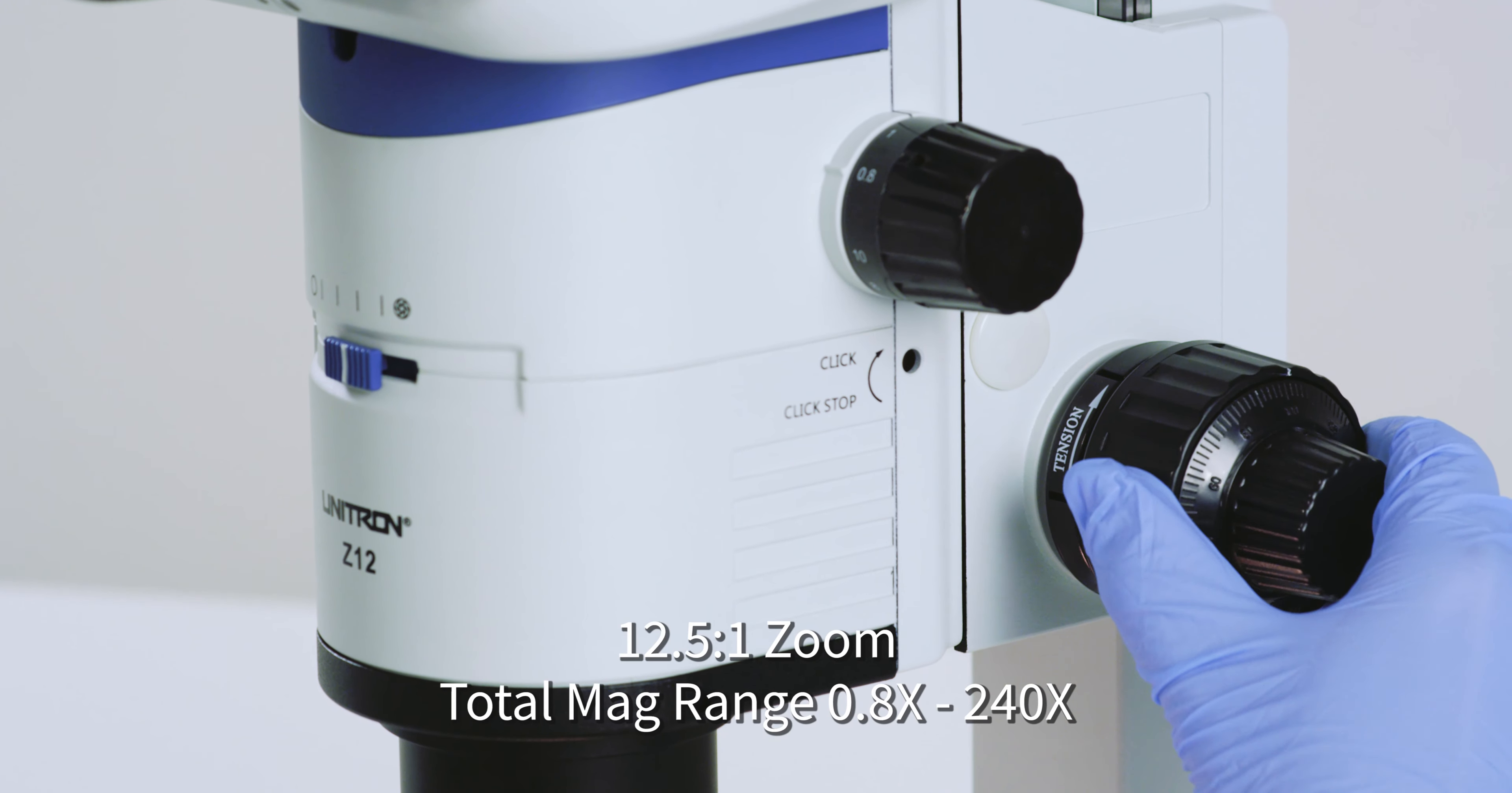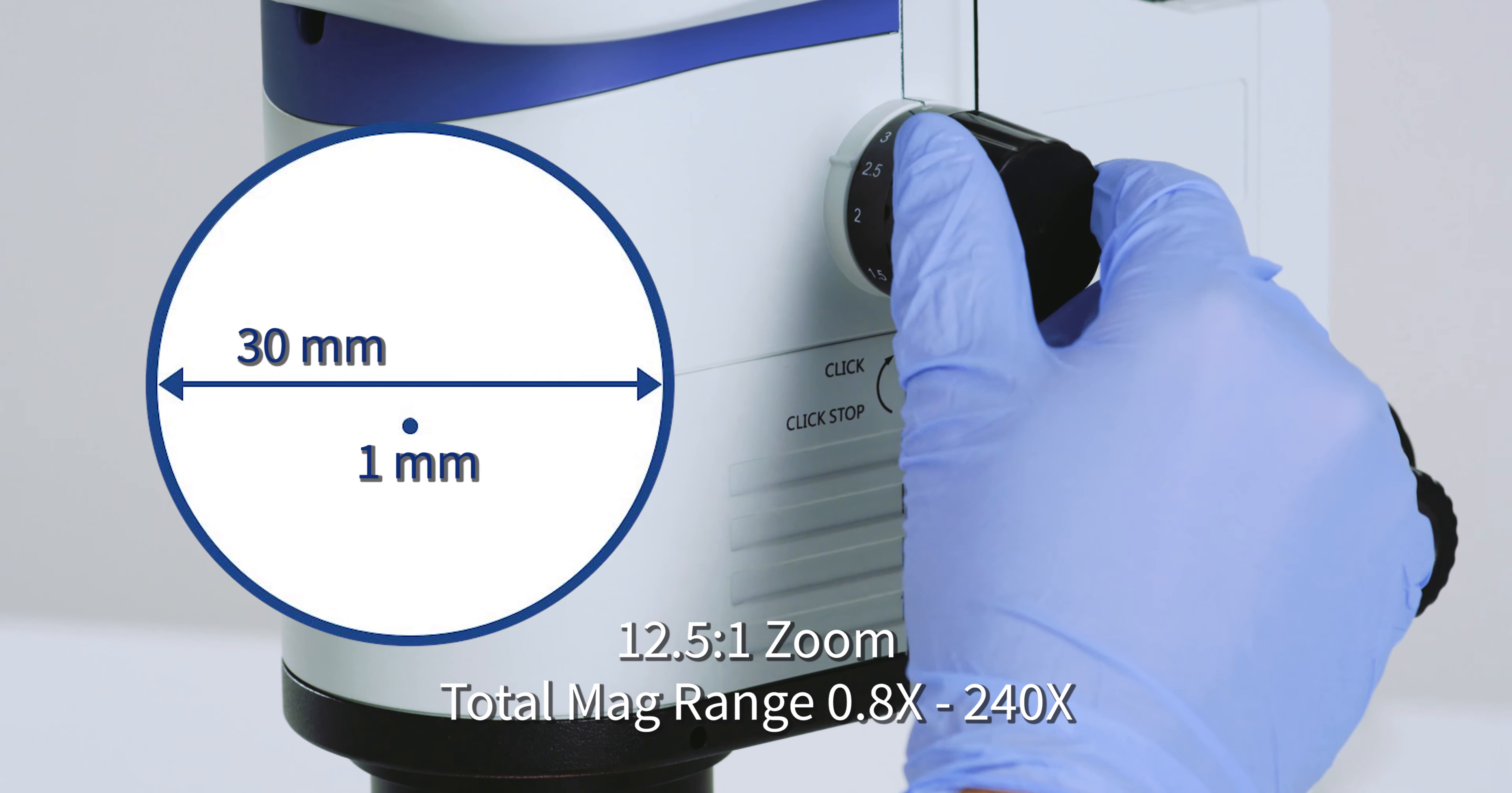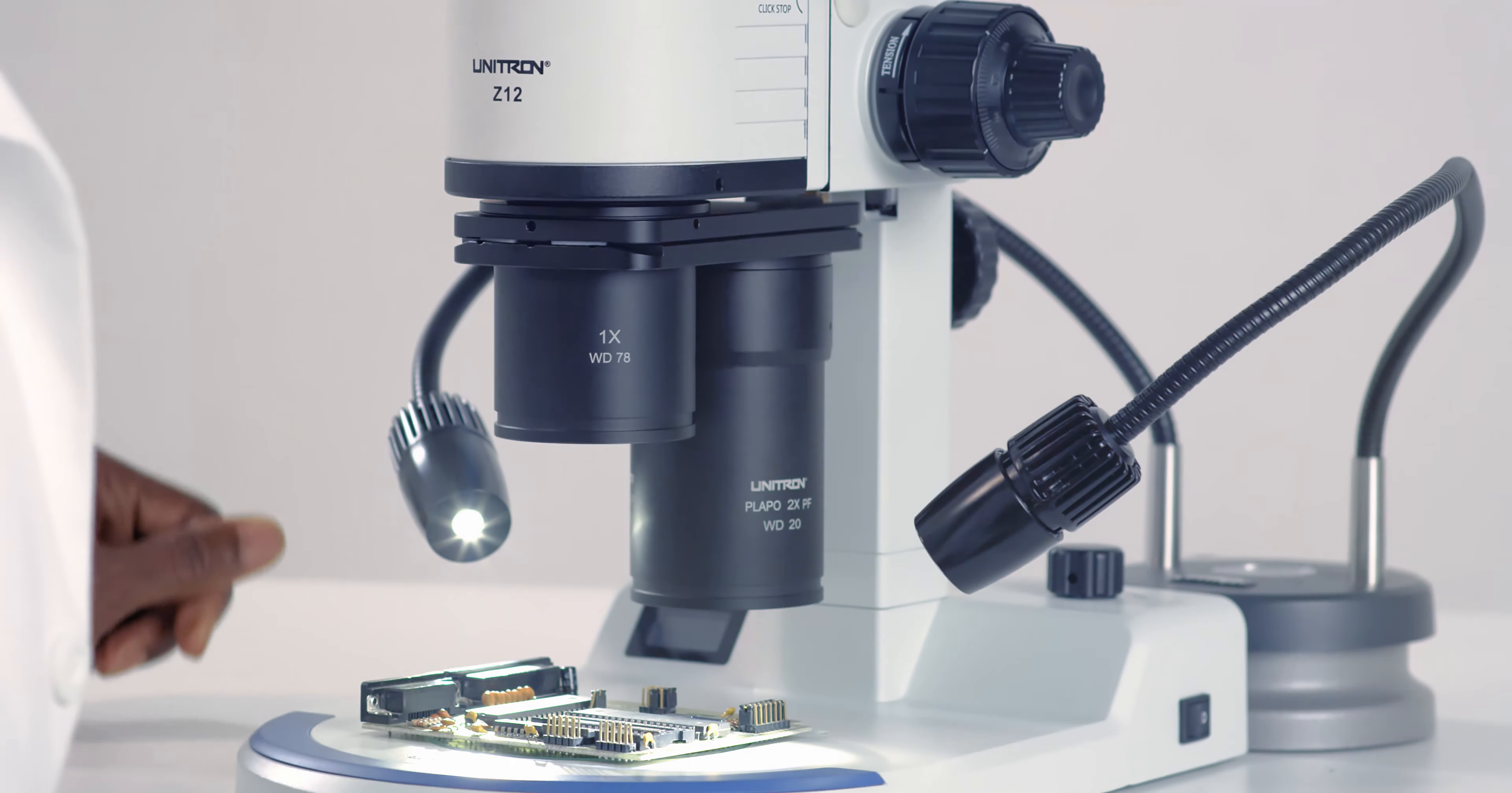The 12.5 to 1 zoom ratio and a magnification range of 0.8x to 240x provides a field of view from 30mm wide down to nearly 1mm. Click stop positions on the zoom knob ensure reproducible magnification changes. Use the optional nosepiece changer to easily change objectives and magnification ranges.